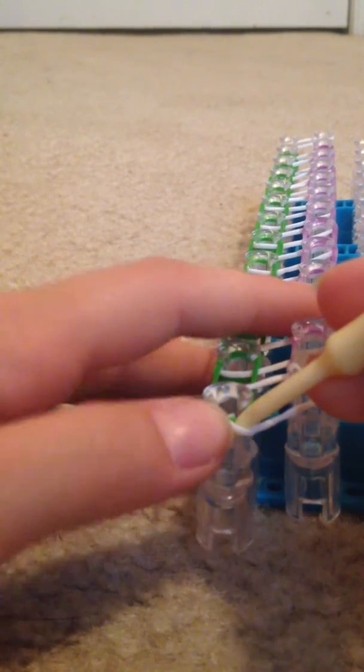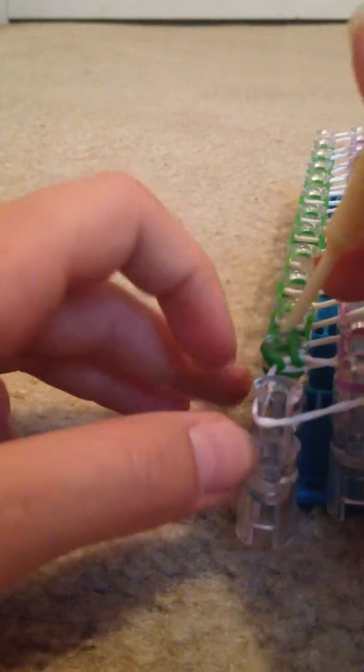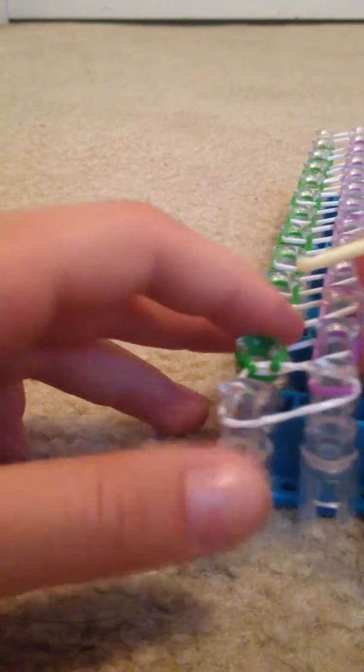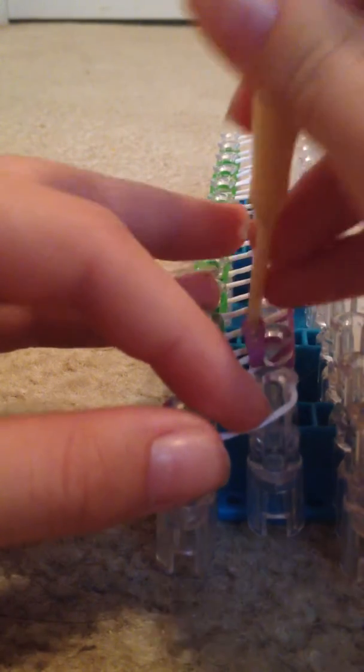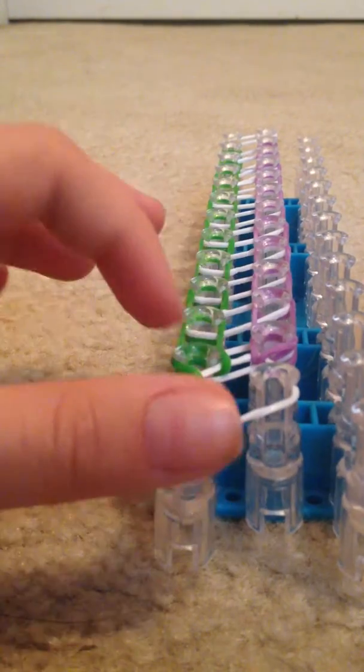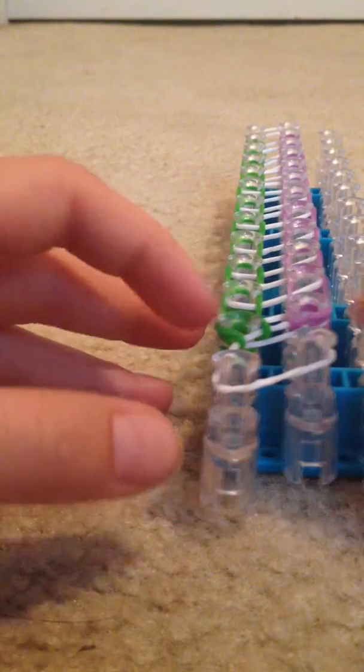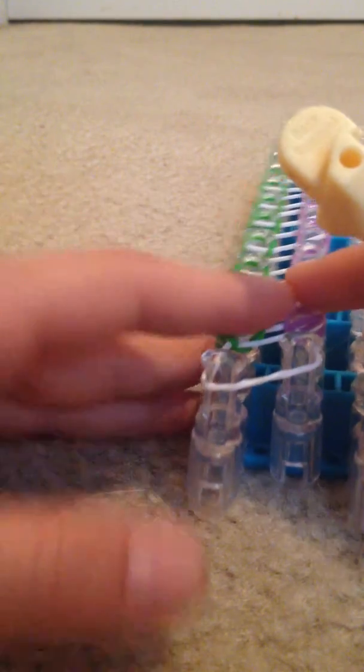So you pull up the green, you hold down the white, bring the green forward, and then you pull the purple, bring it forward to the peg that it originally came from.